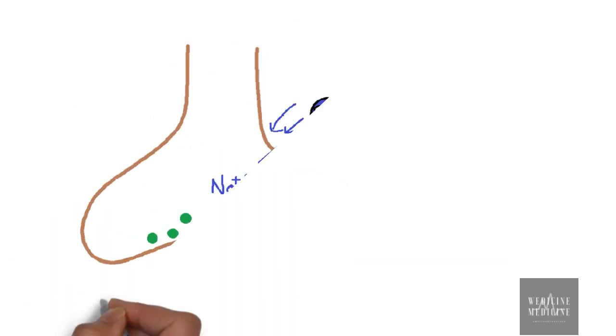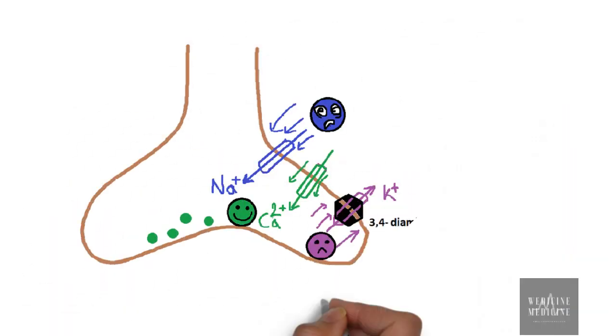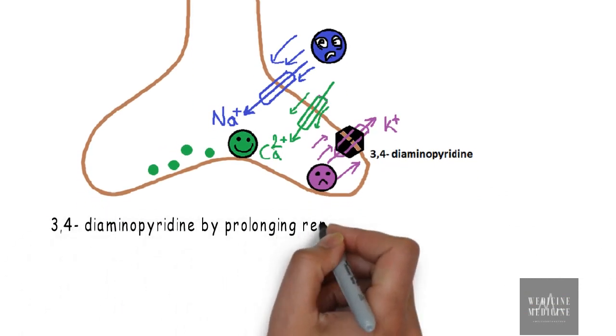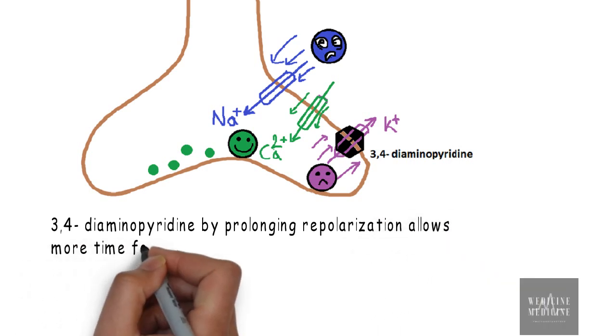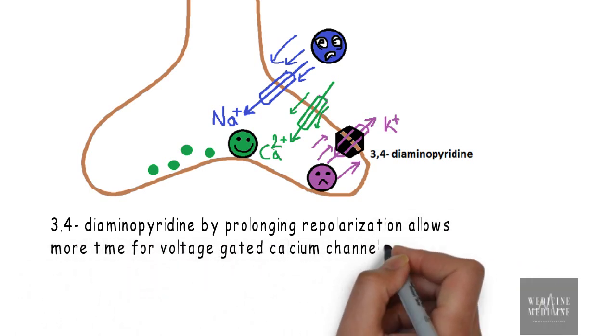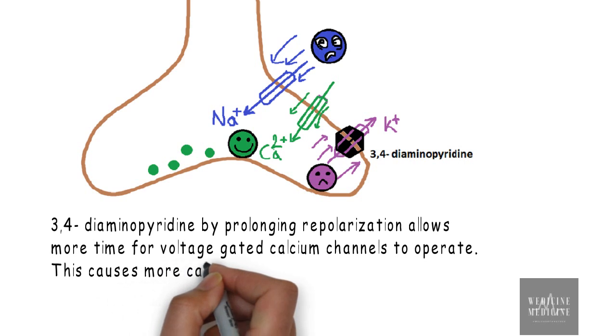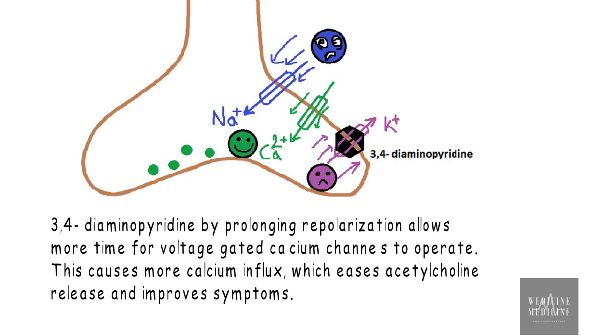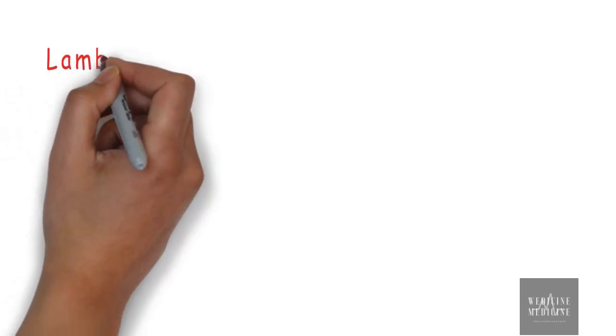This was revised for understanding the mechanism of action of 3,4-diaminopyridine which is a potassium channel blocker. It blocks potassium channel thereby prolonging repolarization which allows more time for voltage-gated calcium channel to operate. This causes more calcium influx which eases acetylcholine release and improves symptoms. Now we can understand why this is the mainstay of treatment for Lambert-Eaton syndrome.